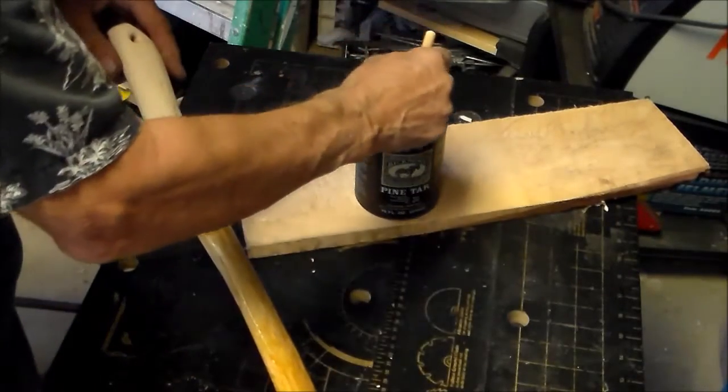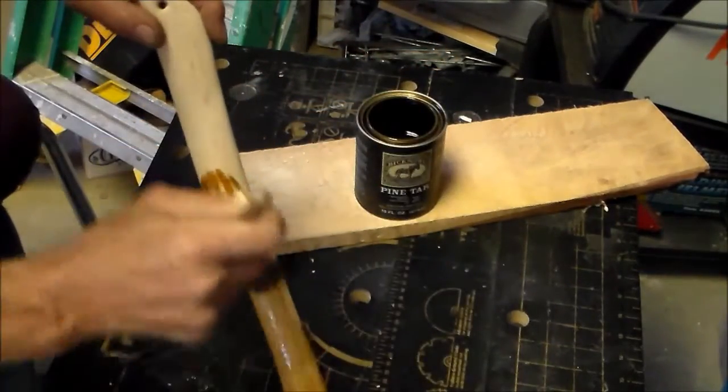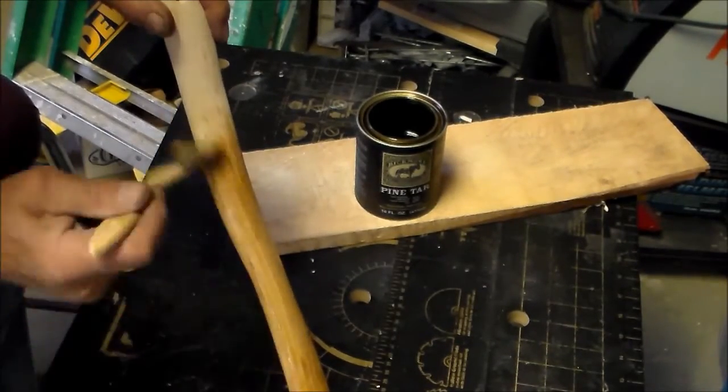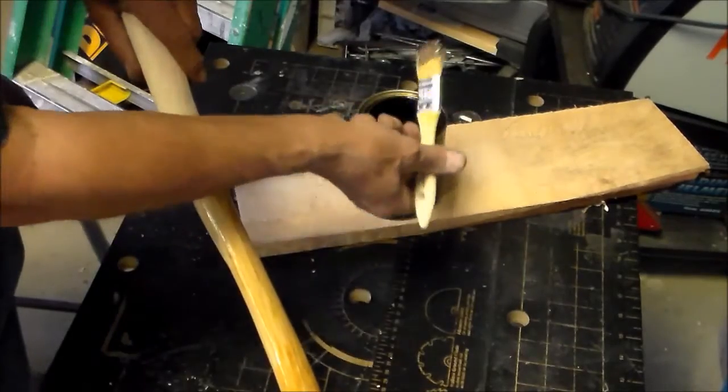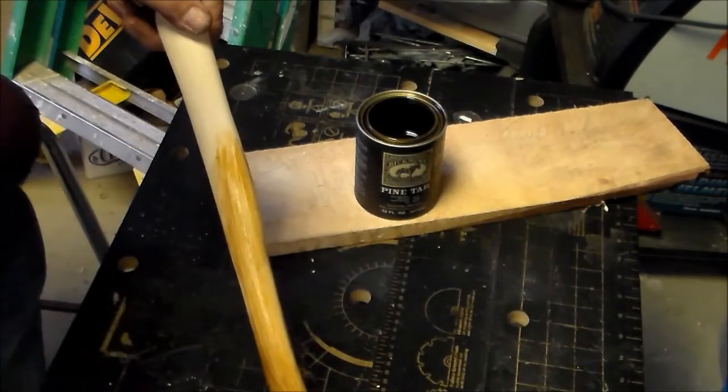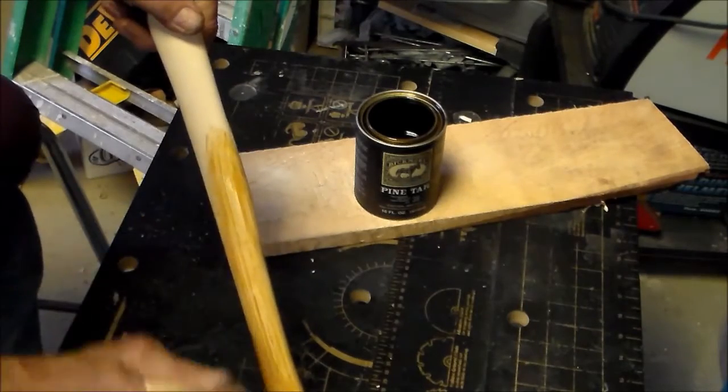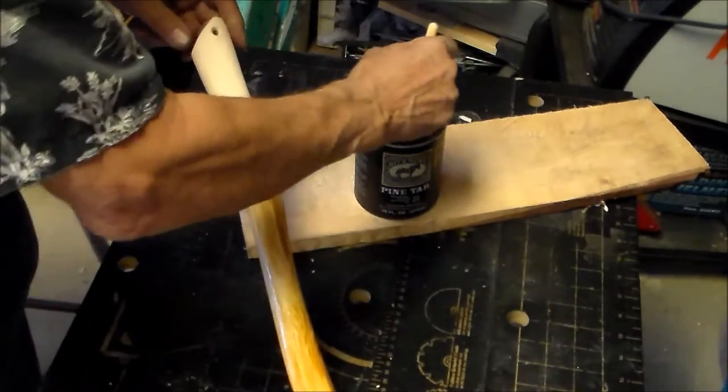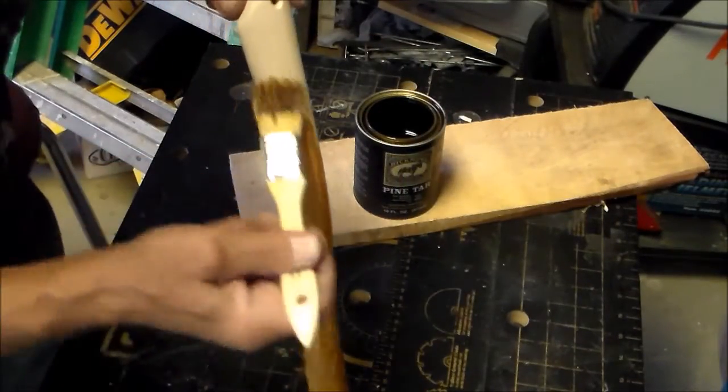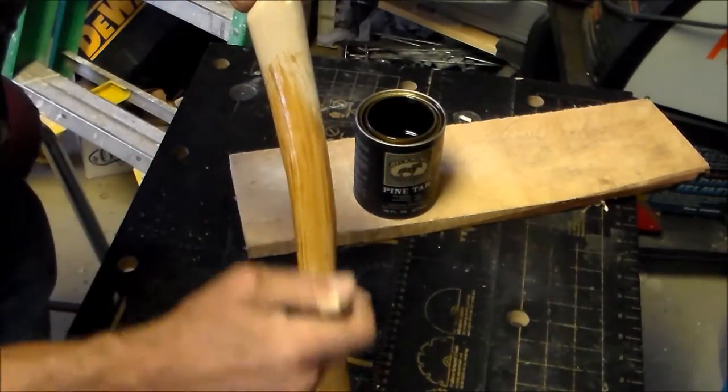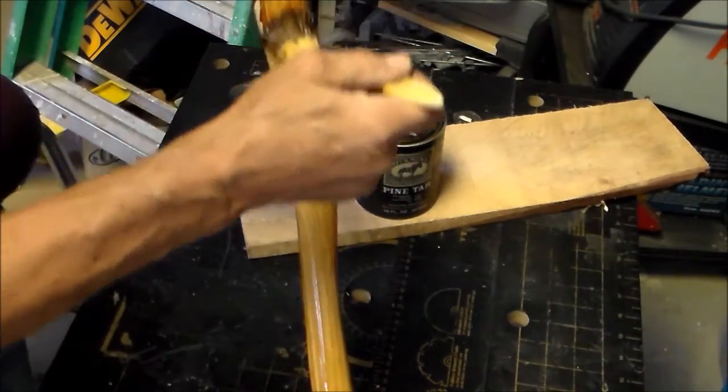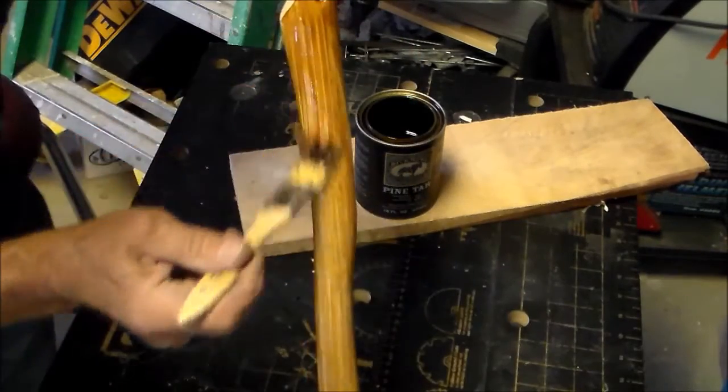The pine tar also leaves somewhat of a sticky finish to the wood. And it's been common knowledge, or used to be, that baseball players would coat their bat handles with pine tar. So that they would have a firm grip onto the bat.